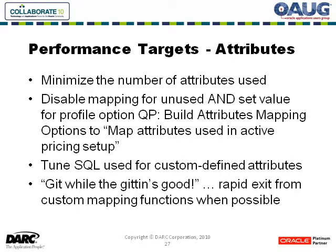For example, if you have a multi-operating unit installation and you've defined a custom attribute that's only to be used for one operating unit, it's worthwhile to have a condition that says: if I'm not pricing this operating unit, get out, return some default value, and bypass any additional logic.